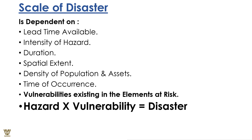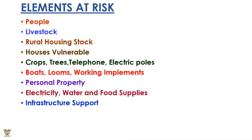Hazard simply needs to be understood as: Hazard × Vulnerability = Disaster. This is the simple scale of disaster. It is the amount of time between impact and effect, the duration of impact, the amount of environment impacted, the population at risk, and the time of occurrence — all of these tell us the vulnerability factor. So vulnerabilities are just elements of risk combined with the hazard level.